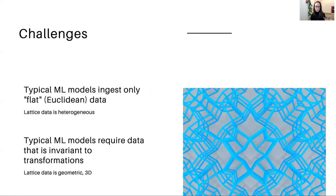Right off the bat, there are some challenges. Typical machine learning models ingest only flat or Euclidean data. In contrast, lattice data is very heterogeneous. It's not as orderly as Euclidean data. Not to mention the fact that it's three-dimensional. This means that techniques that work well in two-dimensional, say image recognition tasks, become very, very difficult when moved to three dimensions. Either the definition doesn't naturally extend or it just becomes computationally more or less intractable.